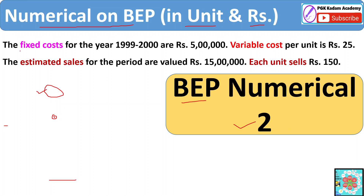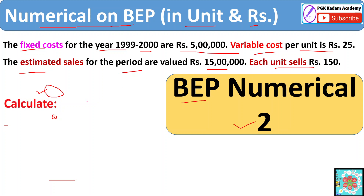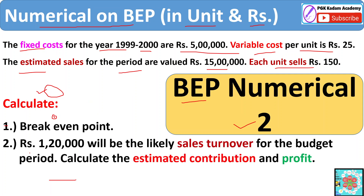The fixed cost given for the year 1999-2000 is rupees 5 lakh. Variable cost for that product per unit is 25 rupees. Estimated sale for the period value is 15 lakh. Each unit sells at 150 rupees. We are going to calculate the BEP in units and also in rupees. We are going to calculate if the sales turnover is 1,20,000 for the budget period. Calculate the estimated contribution and profit.